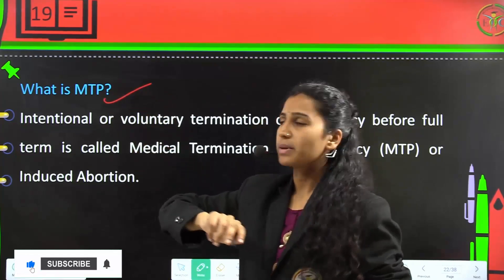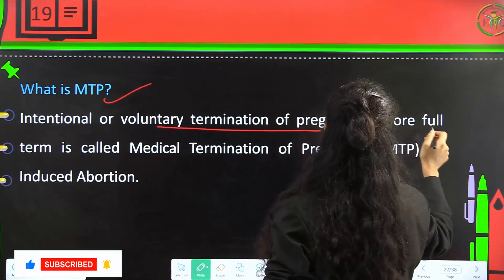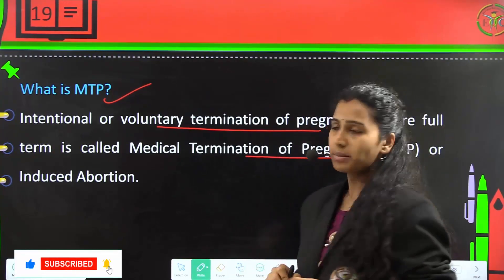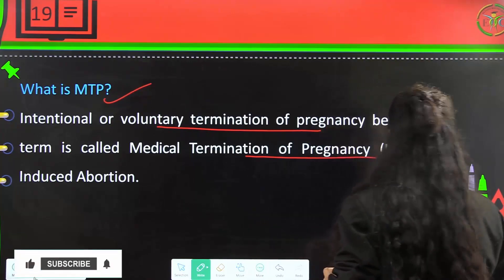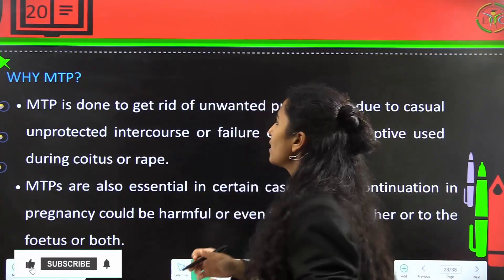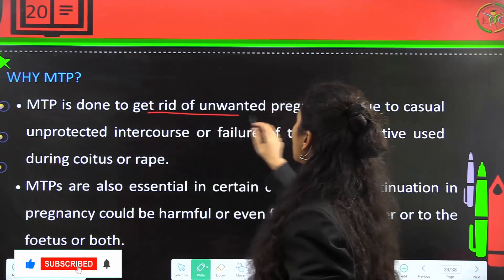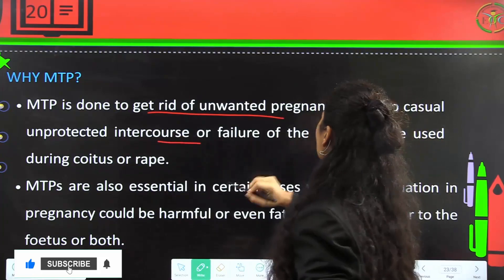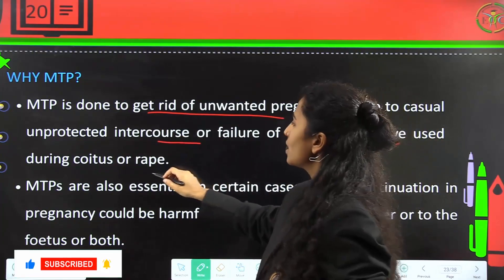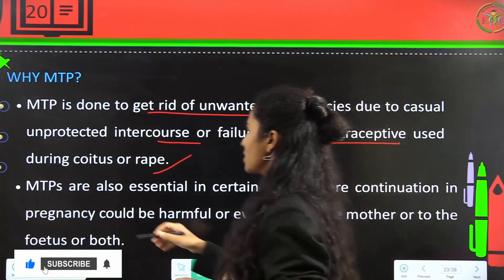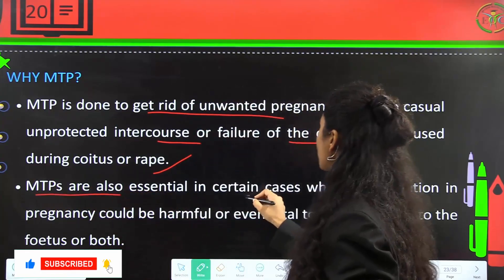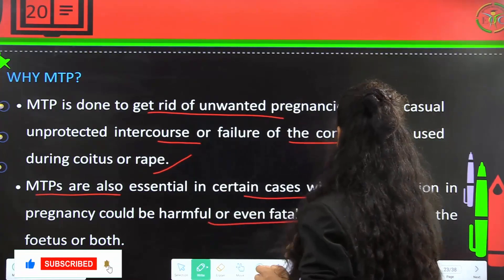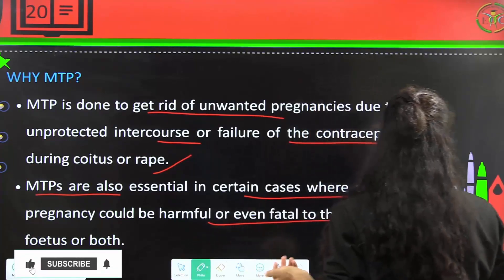MTP — Medical Termination of Pregnancy — is the intentional or voluntary termination of pregnancy before full term, also called induced abortion. MTP is done to get rid of unwanted pregnancies caused by unprotective intercourse, failure of contraceptive use during coitus, or a rape situation. MTPs are also essential in cases where continuation of pregnancy could be harmful or even fatal to the mother, the fetus, or both.